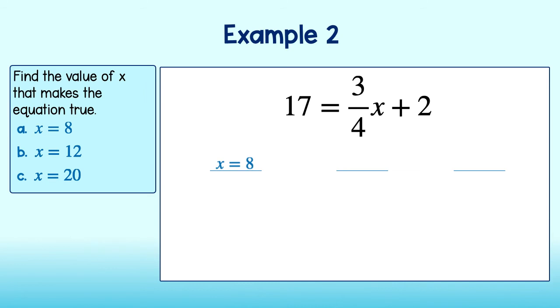So let's start with x equal to 8. We will rewrite our equation with 8 in place of x. When multiplying like this, you will want to write the value in parentheses as to not confuse the numbers you are working with. Okay, 3 fourths times 8 is equal to 6. And then 6 plus 2 is equal to 8.